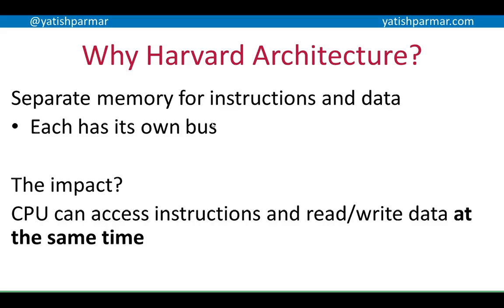Basically, if we have a circuit of given complexity using von Neumann architecture, and the same complexity circuit for Harvard architecture, the Harvard CPU is going to be faster because it doesn't experience that same bottleneck.